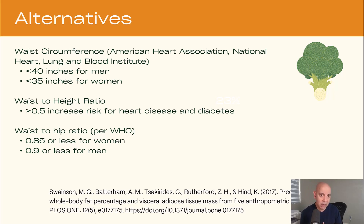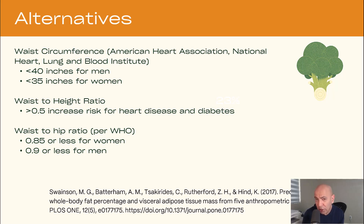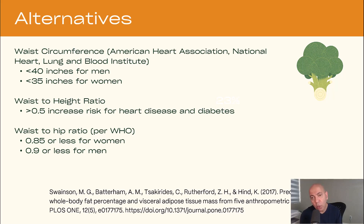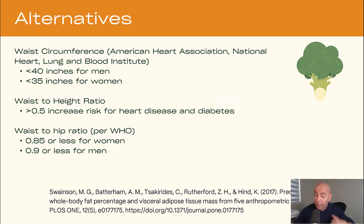BMI is a great quick-and-dirty option, but it's not the only one. One thing I personally like better is waist circumference — you want less than 40 inches for men and less than 35 inches for women. Even better is waist-to-height ratio: you want your waist to be less than half your height. If the ratio is greater than 0.5, the risk for heart disease goes up. So ideally, your waist should be less than half your height.